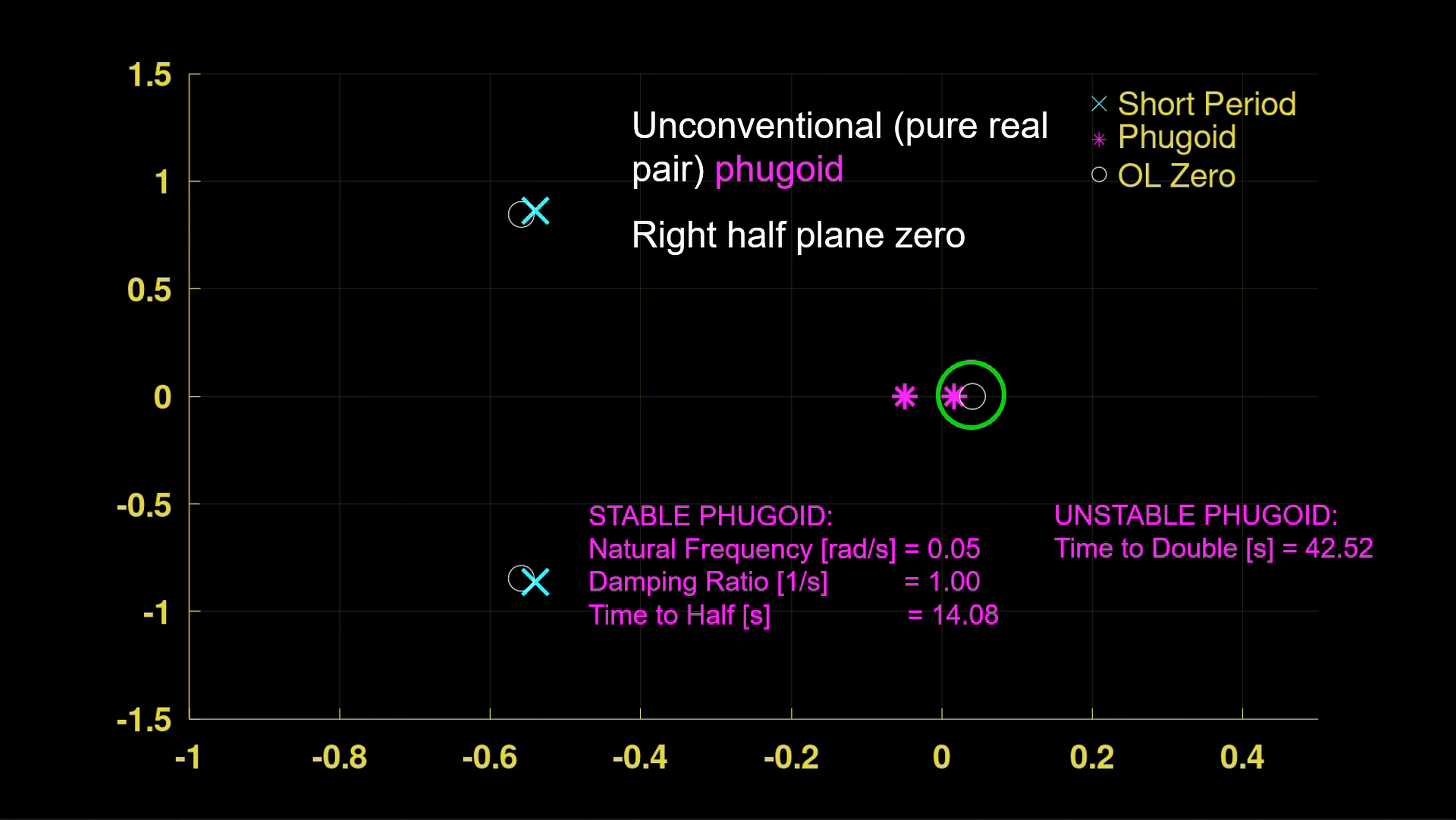And if so, this means thankfully the right half plane open loop zero will ultimately limit the severity of that pitch instability. But we should not expect to stabilize pitch with airspeed control. Pitch control is the subject of the other control process in the automatic landing system.